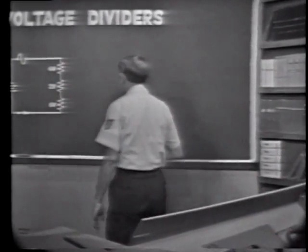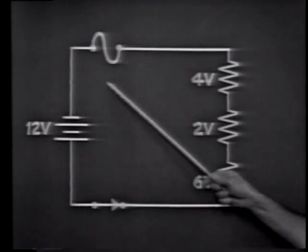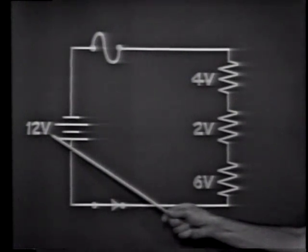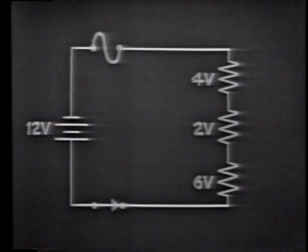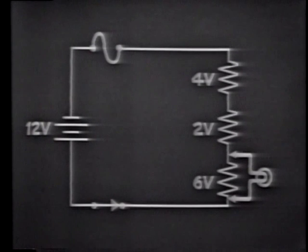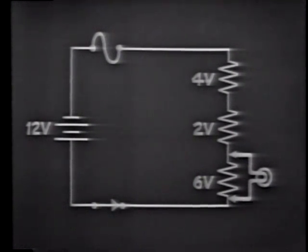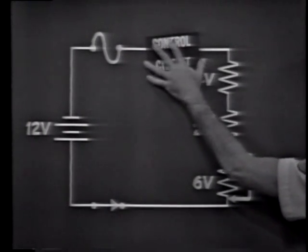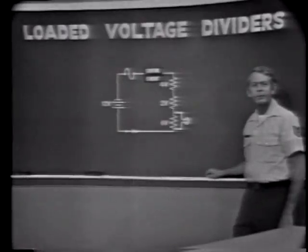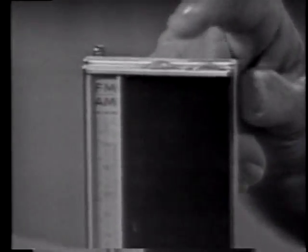Let's go over some of the things we should remember about the loaded voltage divider. A voltage divider is basically a series circuit that divides the applied voltage into several smaller increments. When the circuit is loaded, all of the voltages in the divider change. The voltage change is caused by a decrease in total resistance, which allows total current to increase. To get accurate voltages, you must know the amount of load you're placing on the circuit. Special circuits are used to maintain a constant voltage under varying load conditions. The voltage divider is one of the most versatile and commonly used circuits in electronics, found in equipment ranging from a small transistor radio to the most complex computer.